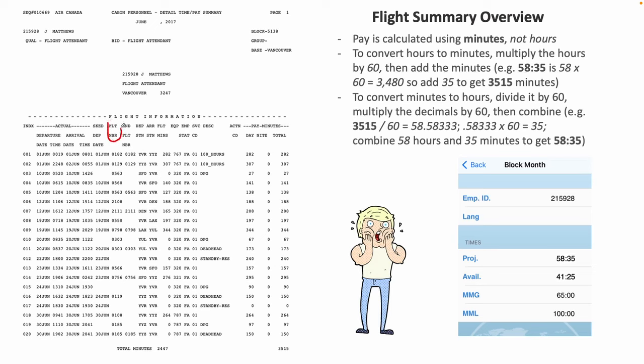Flight number is fairly self-explanatory — it indicates the corresponding flight number for each index item. For index item number 1, the flight number is 182. As a Vancouver-based person, 182 is usually Vancouver to Toronto, and at this particular time it was a red-eye. So 12:19 AM was the departure time in Pacific time, and 8:01 AM was the arrival time in Eastern time.